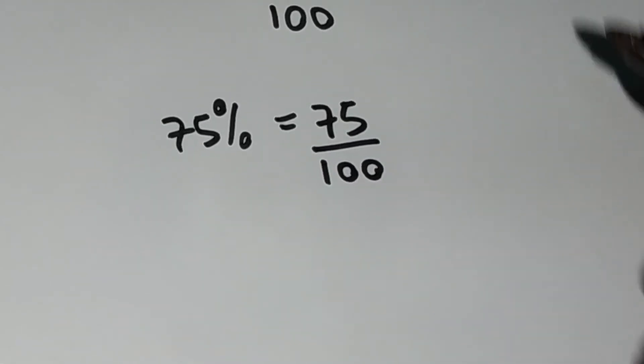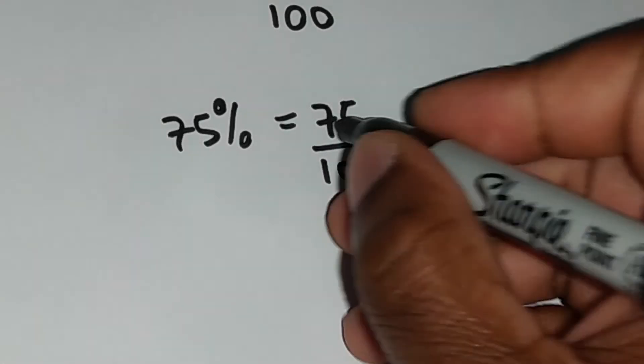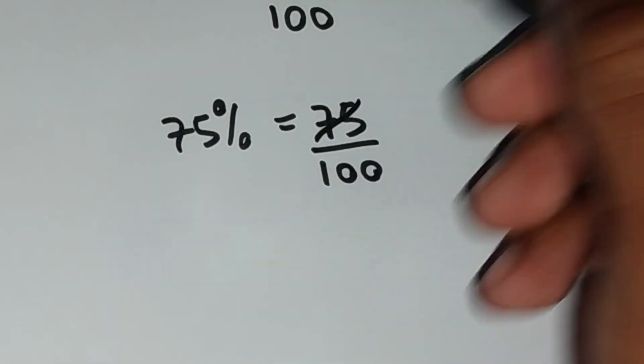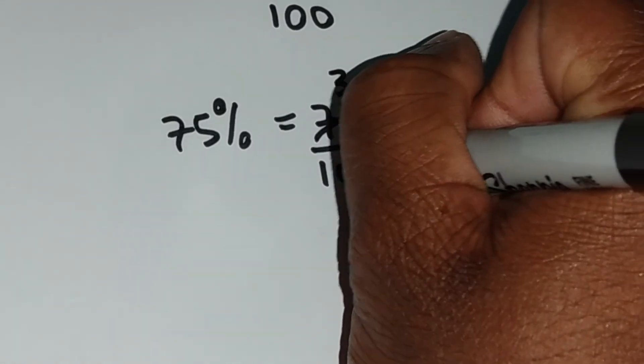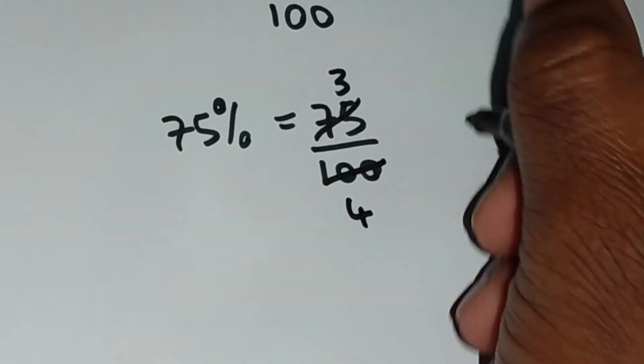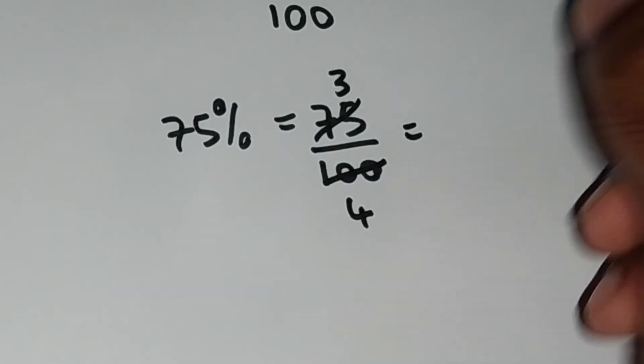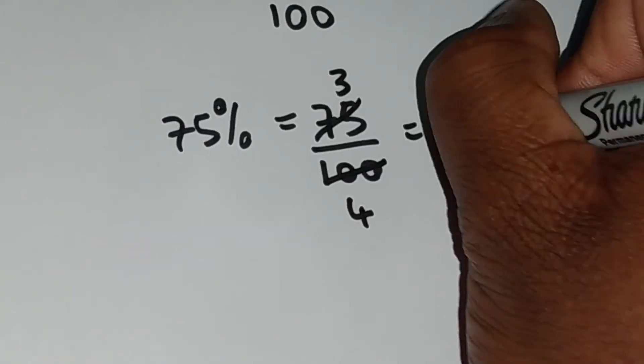When we look at 75 and 100, the highest common factor for both these numbers is actually 25. 25 into 75 goes three times. 25 into 100 goes four times. So 75% as a fraction can also be written as three out of four.